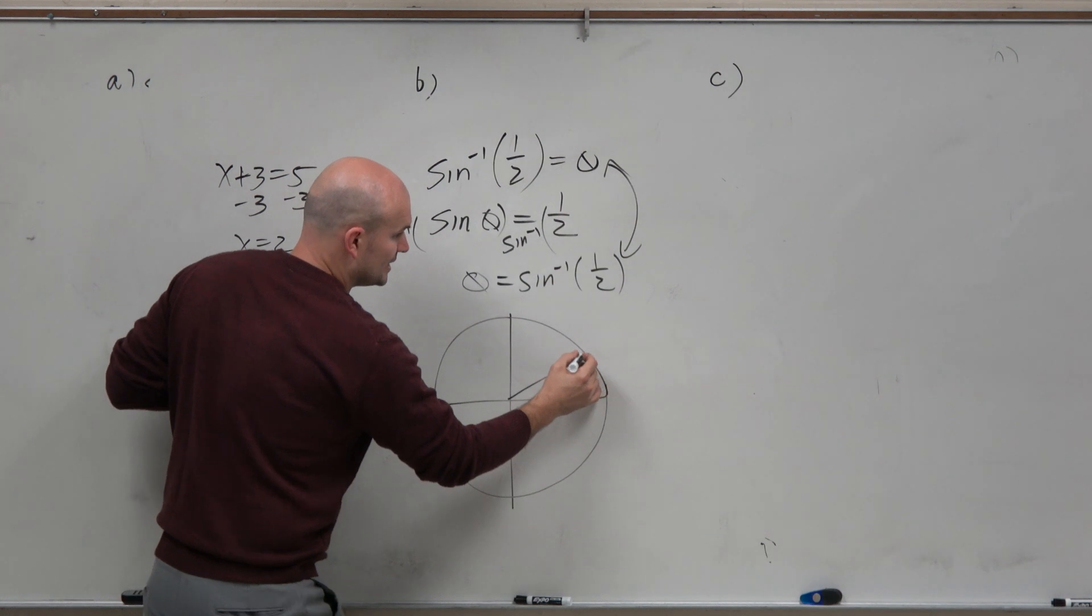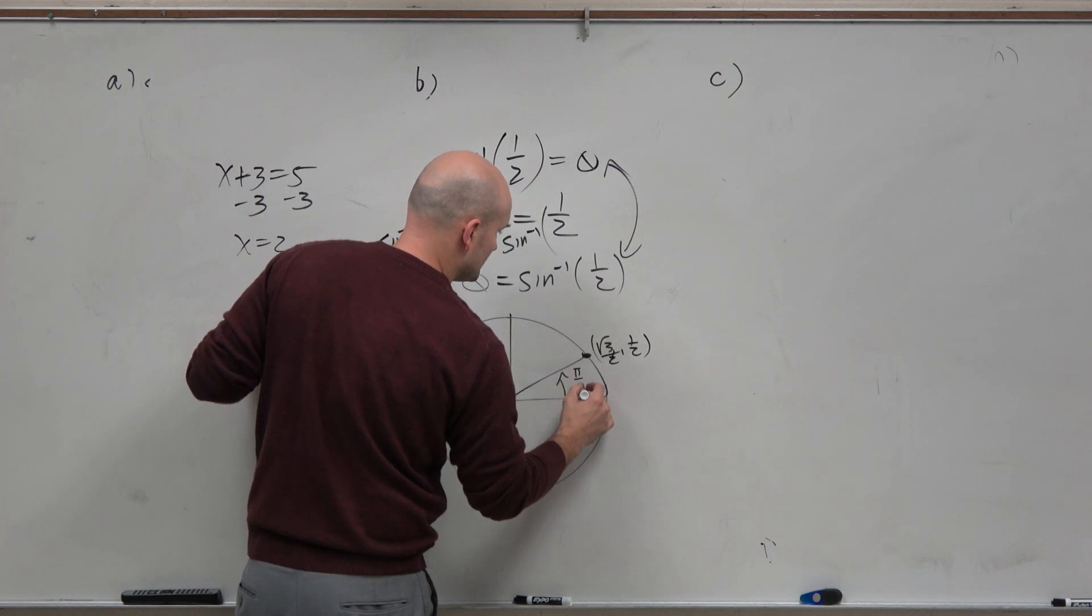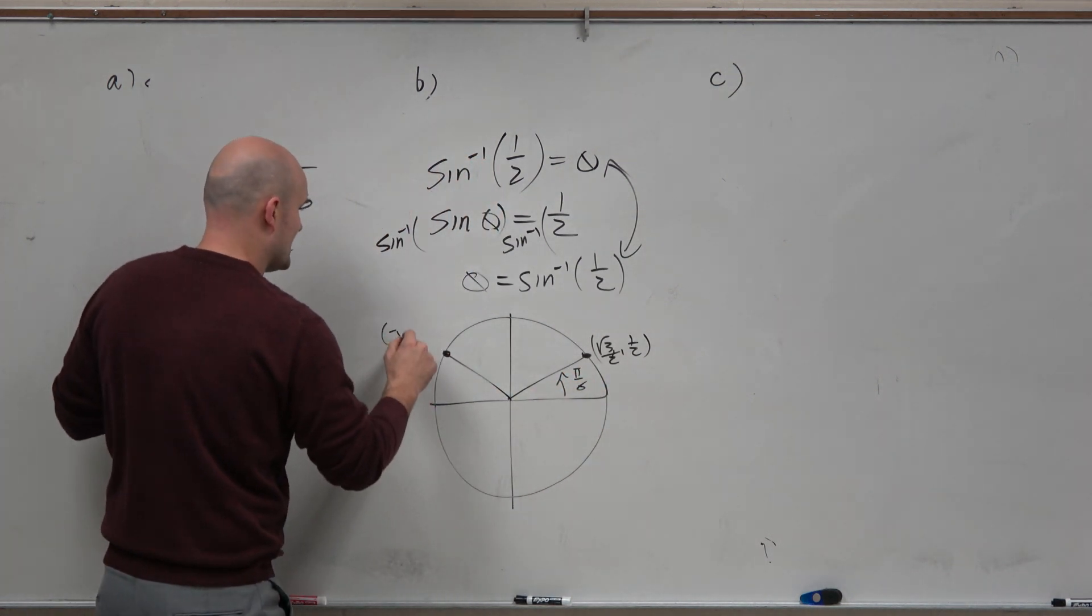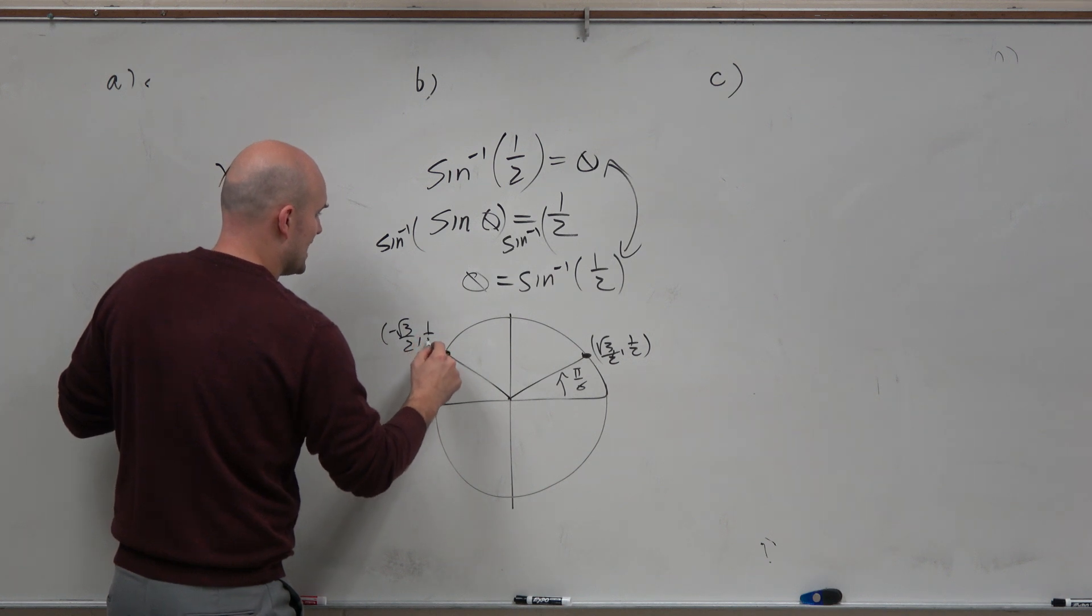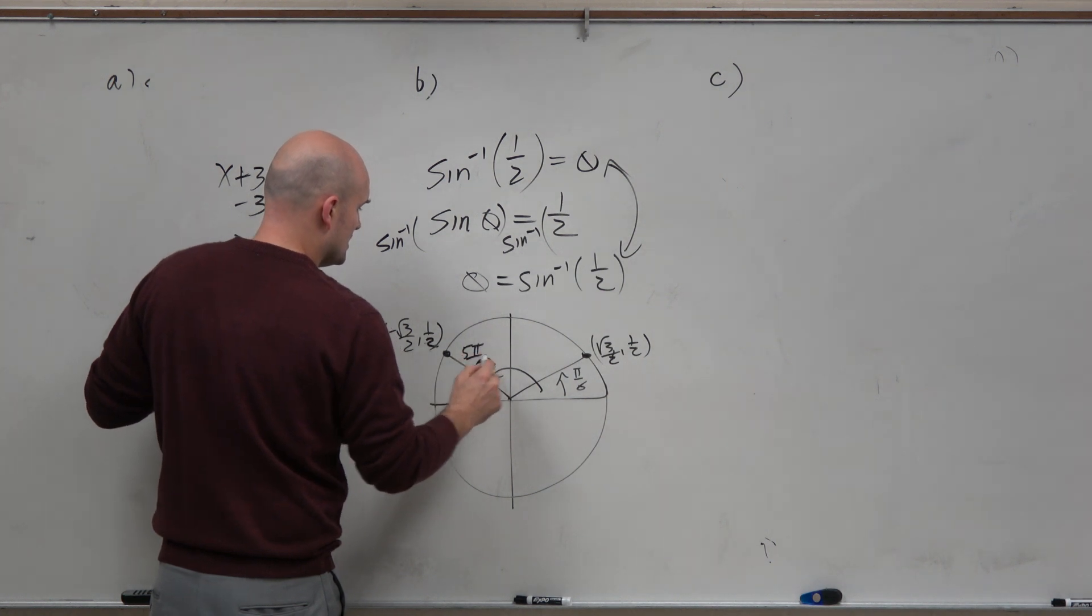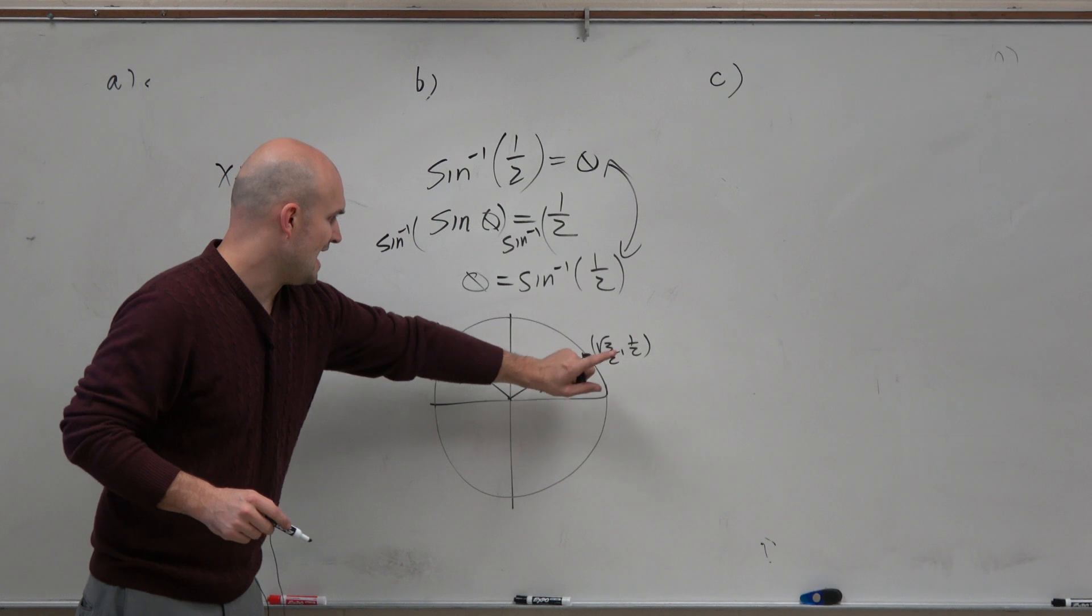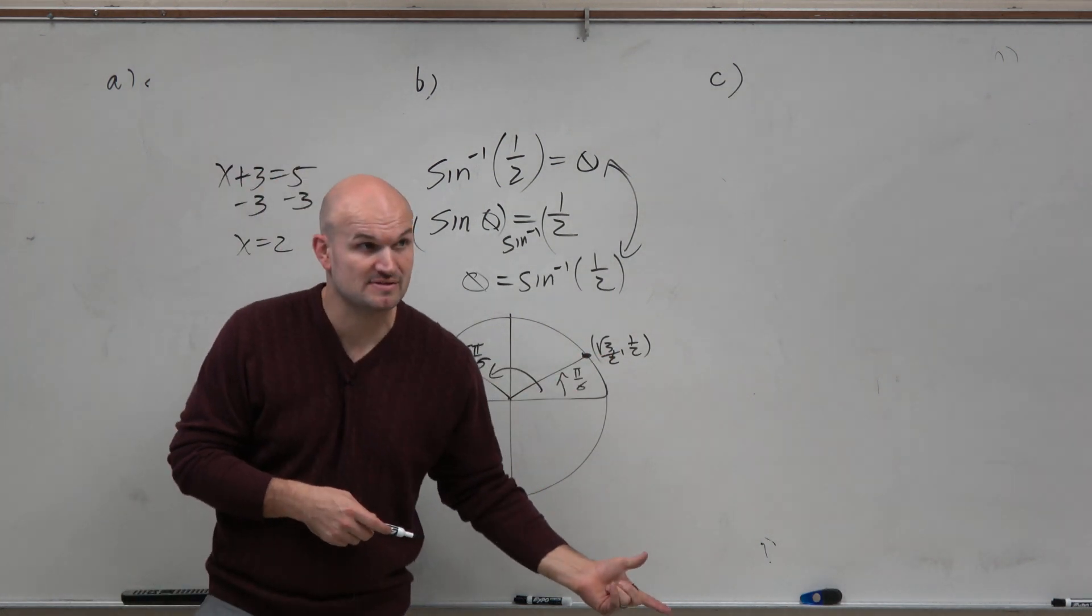Well, I know that's going to equal here: square root of 3 over 2 comma 1 half. That angle was pi over 6. And it works over here at negative square root of 3 over 2 comma 1 half. And that angle was 5 pi over 6. So it looks like this satisfies this equation twice, at pi over 6 and 5 pi over 6. So should I write down pi over 6 and 5 pi over 6?